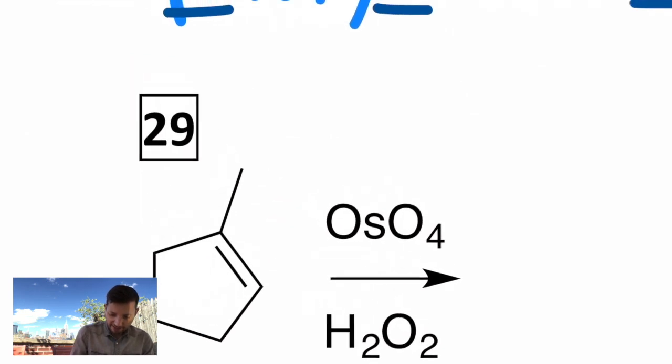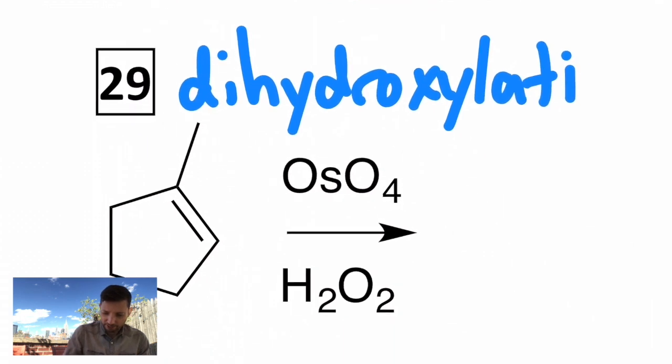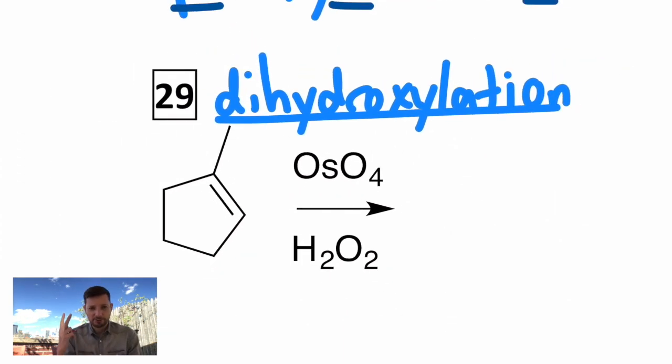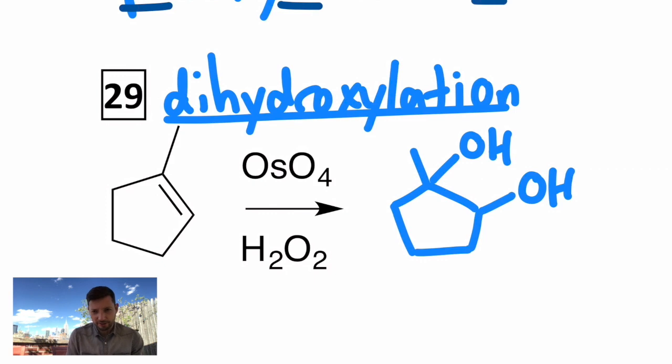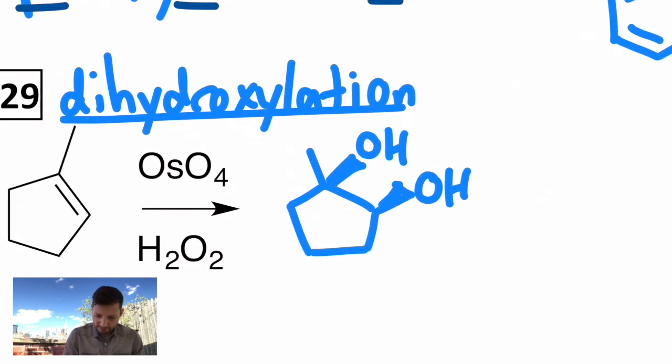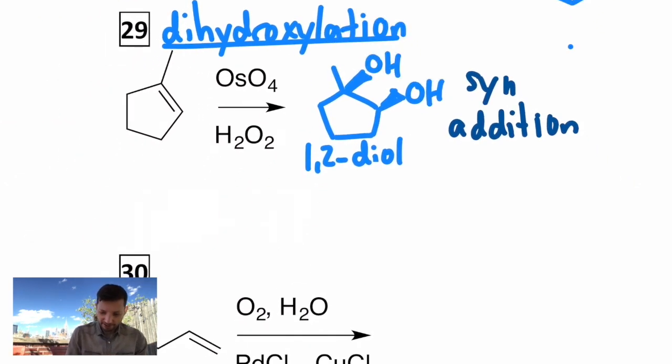The second one is called dihydroxylation. And most of these are descriptive names, meaning they tell you what it does. Dihydroxylation makes two hydroxyl groups attached to the alkene. So methylcyclopentene will become a diol. Two OHs attached to each carbon. And this goes with syn addition. I'm going to make these coming out of the page. Syn addition. And you would get the enantiomer as well. But it will also be syn.